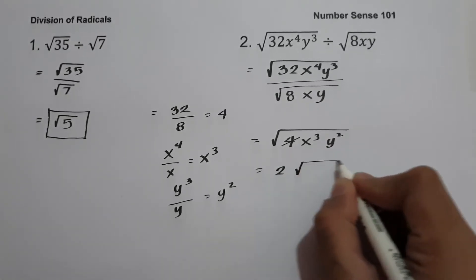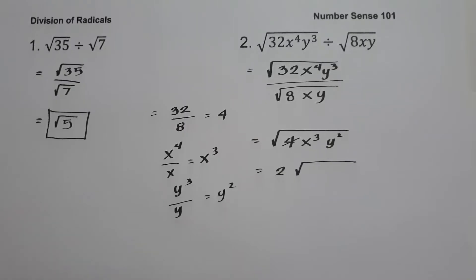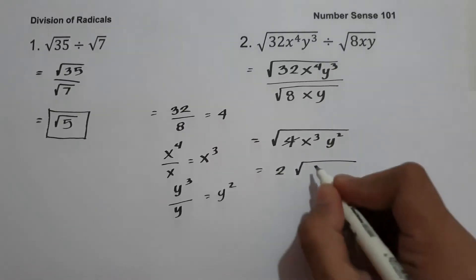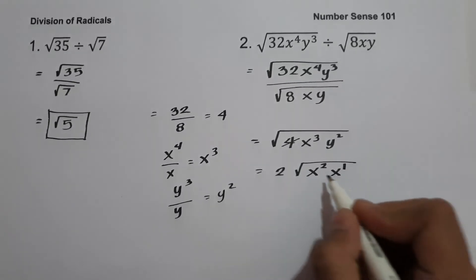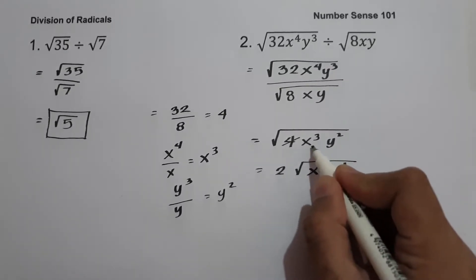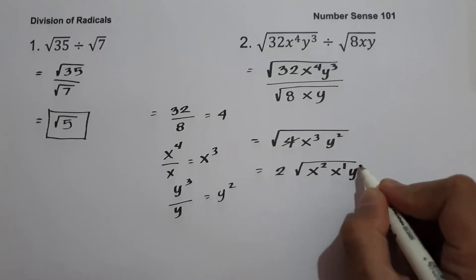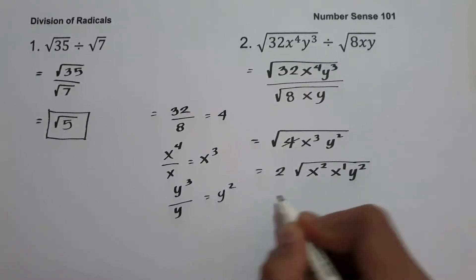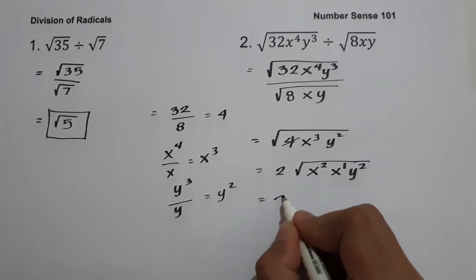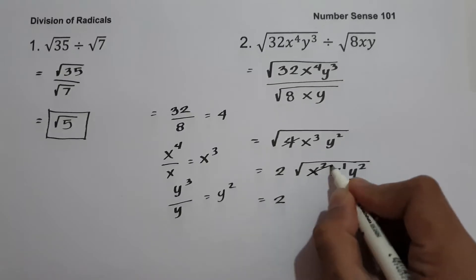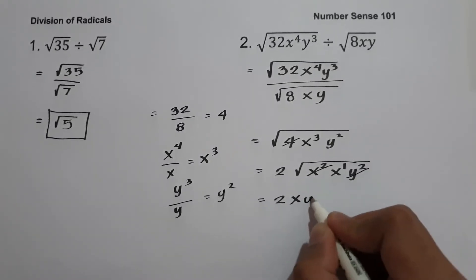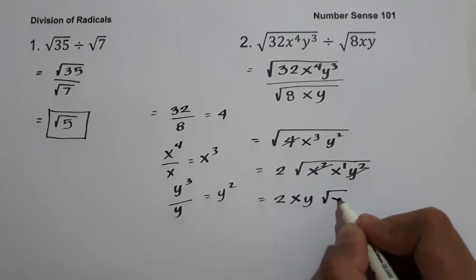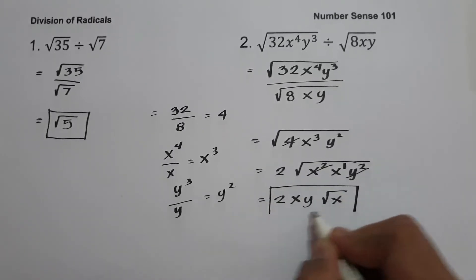To simplify, the square root of 4 is 2. Dividing the exponent by 2 (since our index is 2), we get x squared and x raised to 1, which add to give x cubed. So we have 2, square root of x squared is x, square root of y squared is y, and then we have square root of x. This will be our answer.